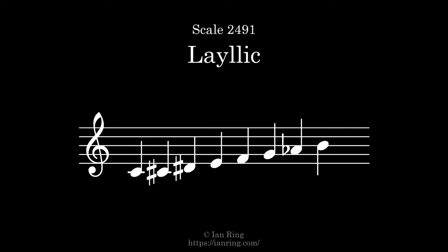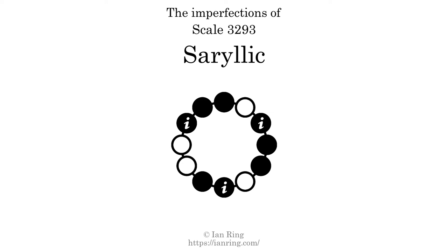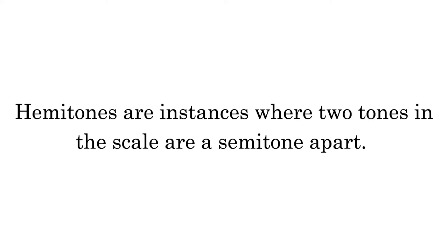Imperfections are tones that have no tone a perfect fifth interval above them. This scale has 3 imperfections. They are at positions here, here, and here. Hemitones are instances where 2 tones in the scale are a semitone apart. This scale has 5 hemitones. They are at positions here, here, here, here, and here.